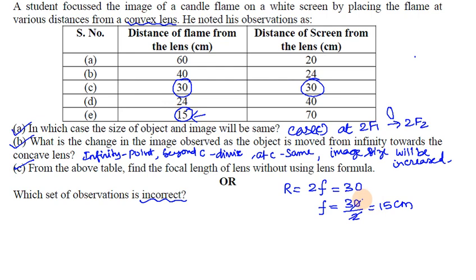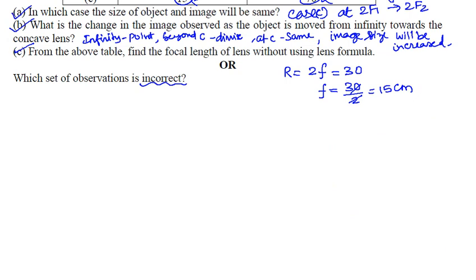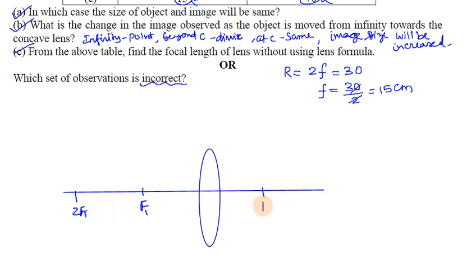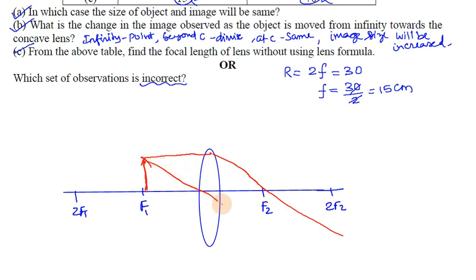This is a ray diagram showing image formation. The image is formed by the rays through the lens. When the object is placed at the focus, image formation is at infinity.